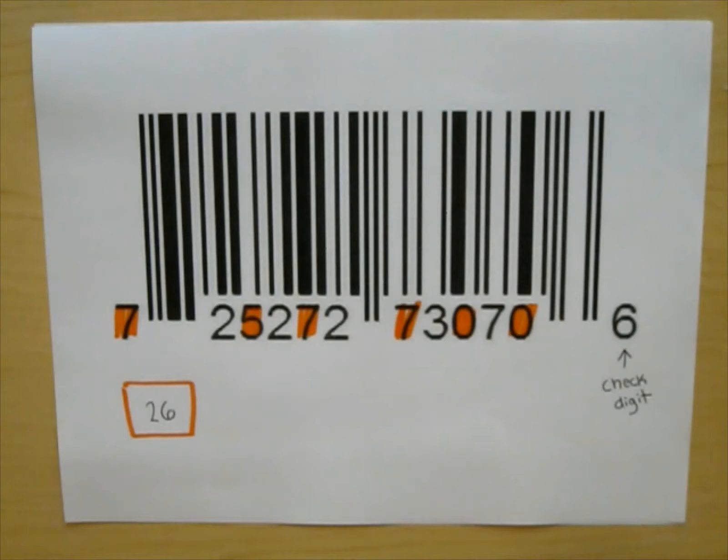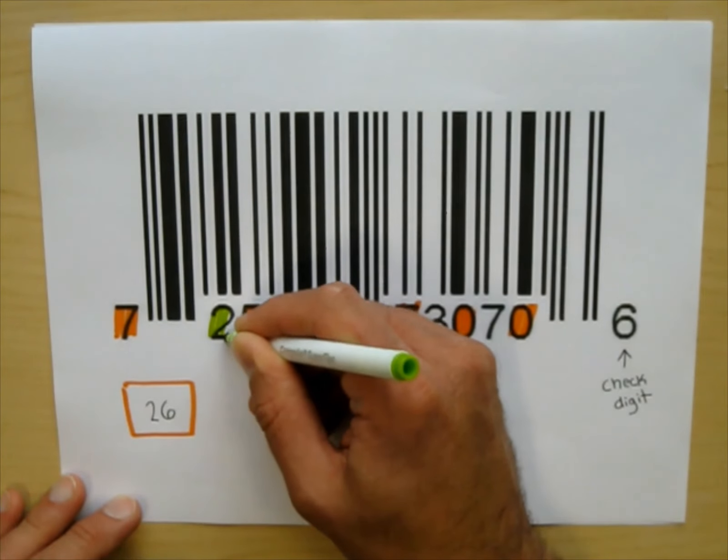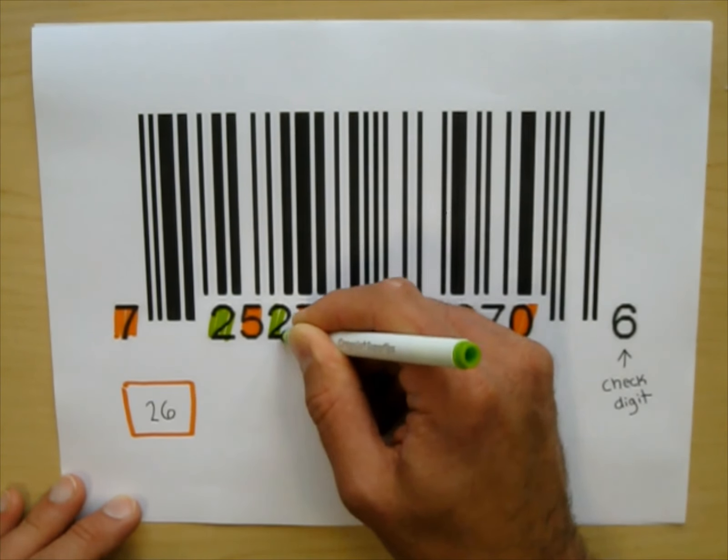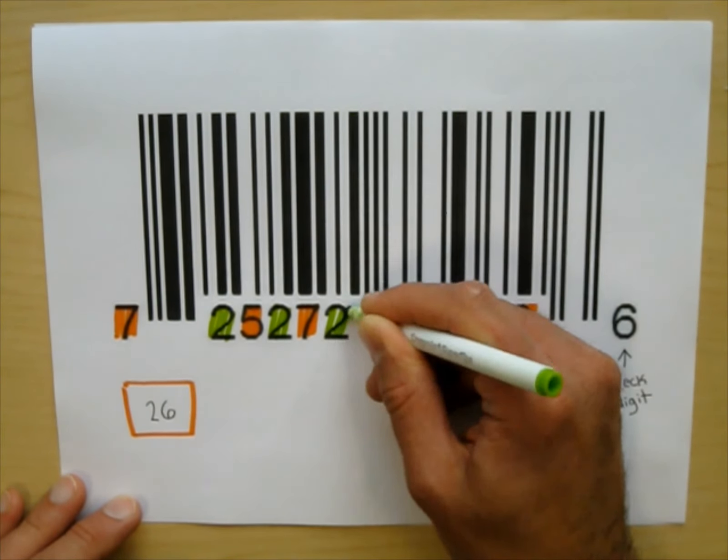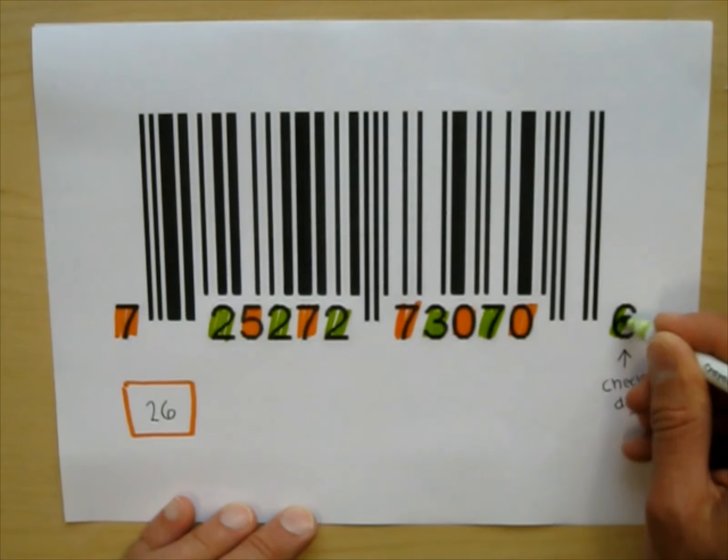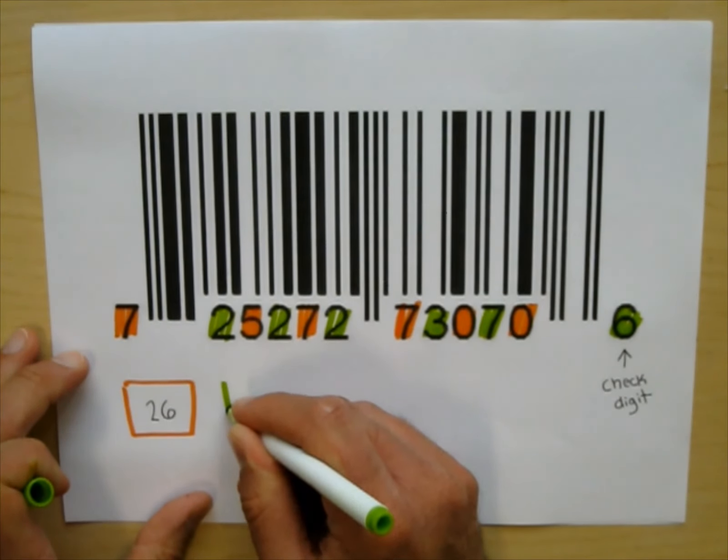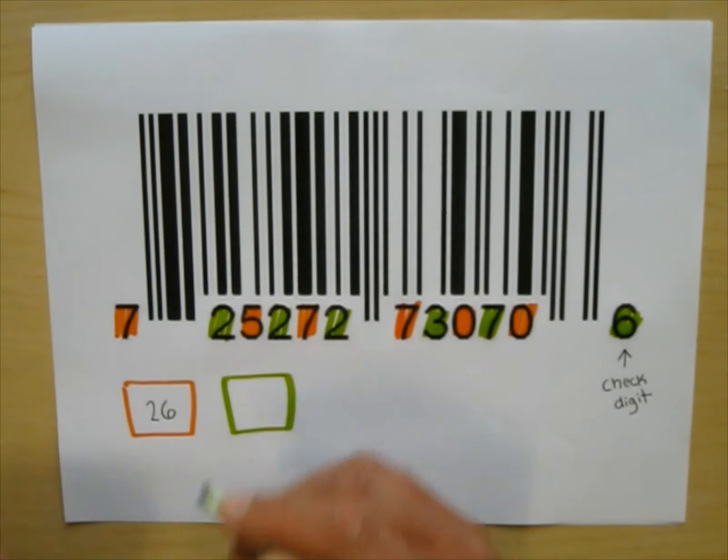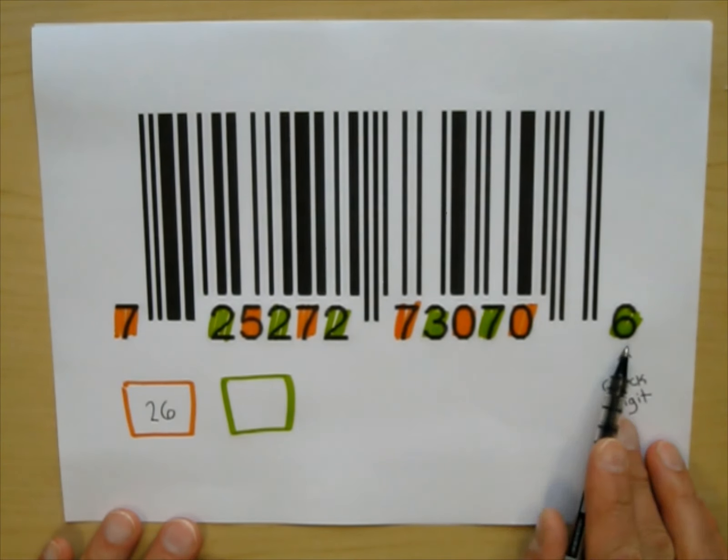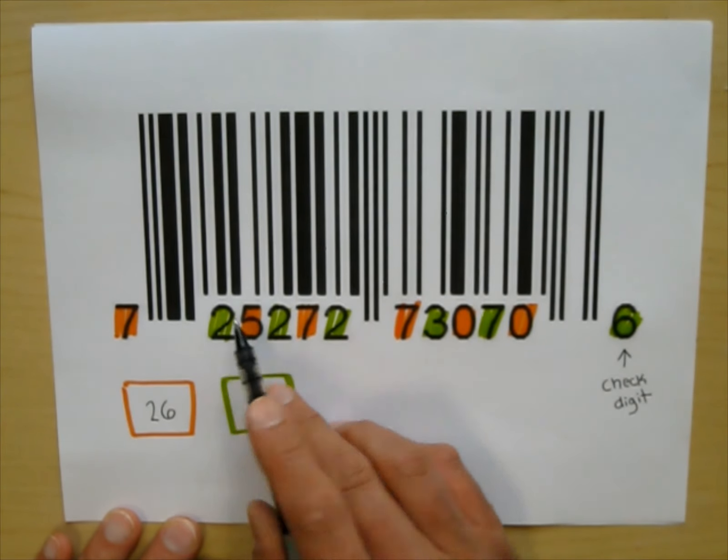Now the other numbers, so those were sort of the odd position numbers, the even position numbers, I'm going to highlight in green. The check digit is one of the green ones. I'm going to add those up and put them in the green box. And when I do, I end up getting 13, 14, 15, 16, 17, 18, 19, 20, 21, 22.